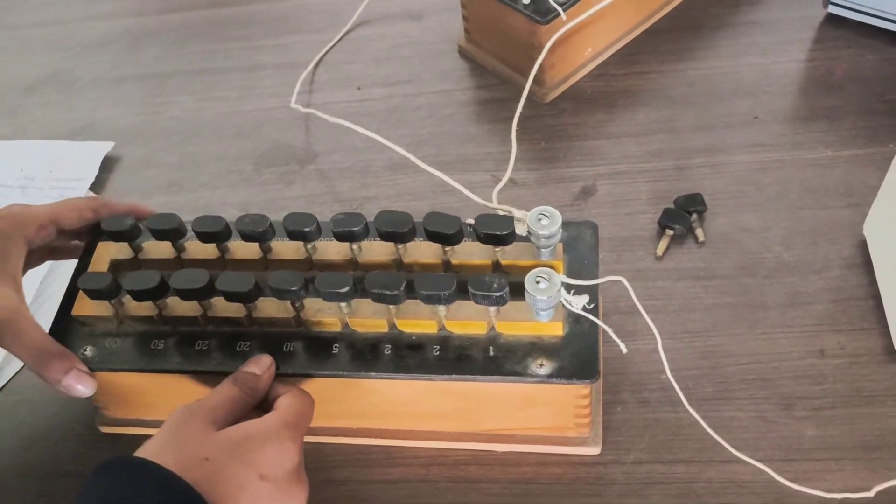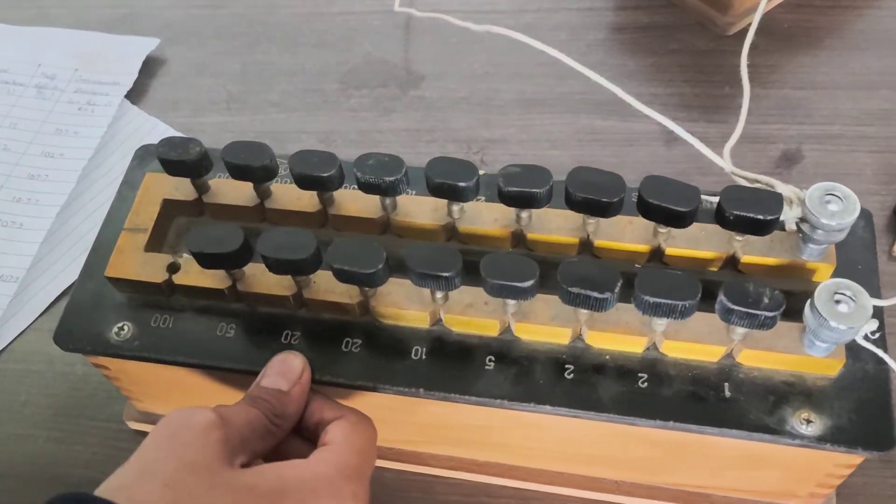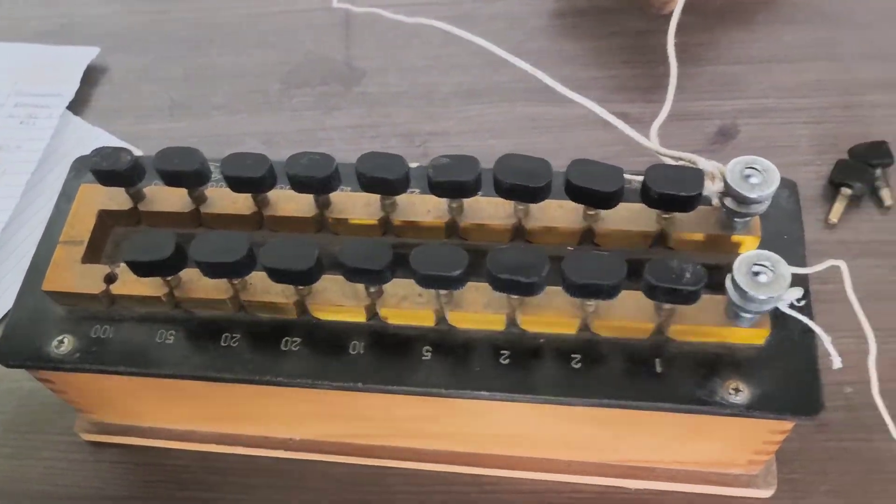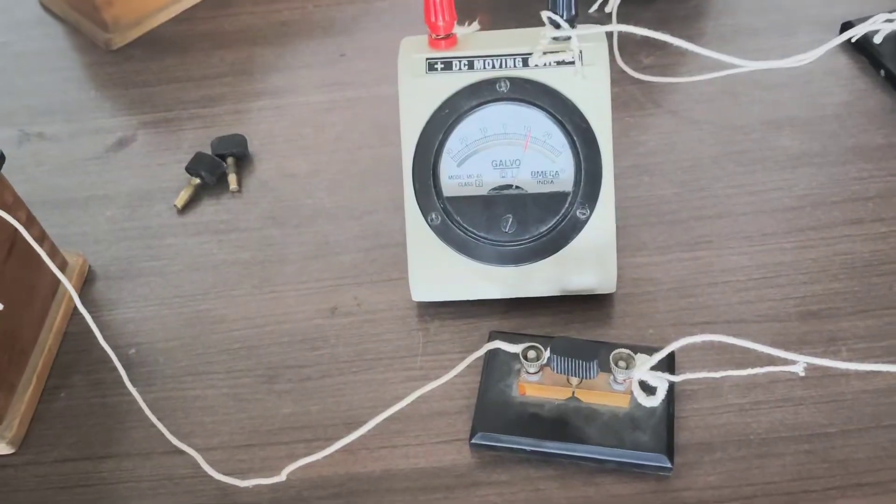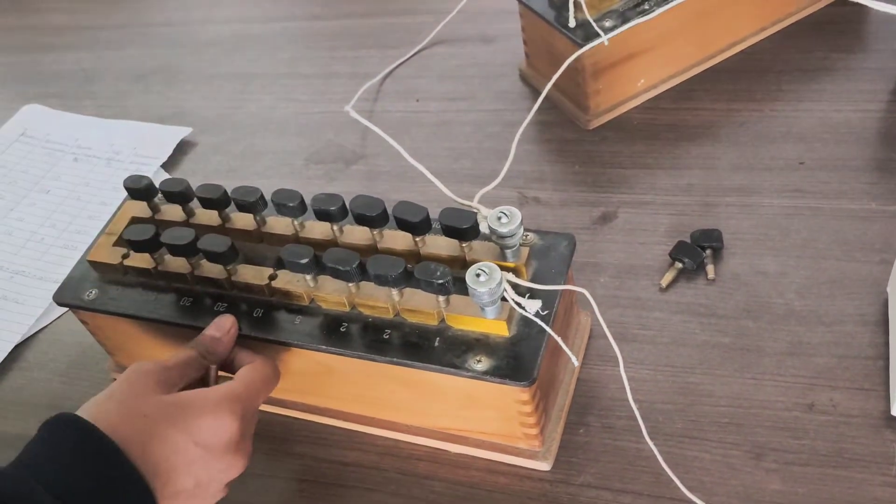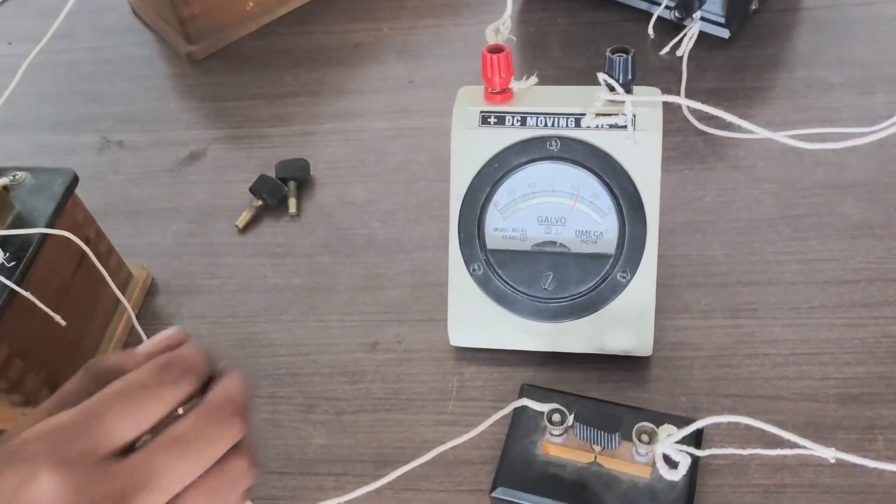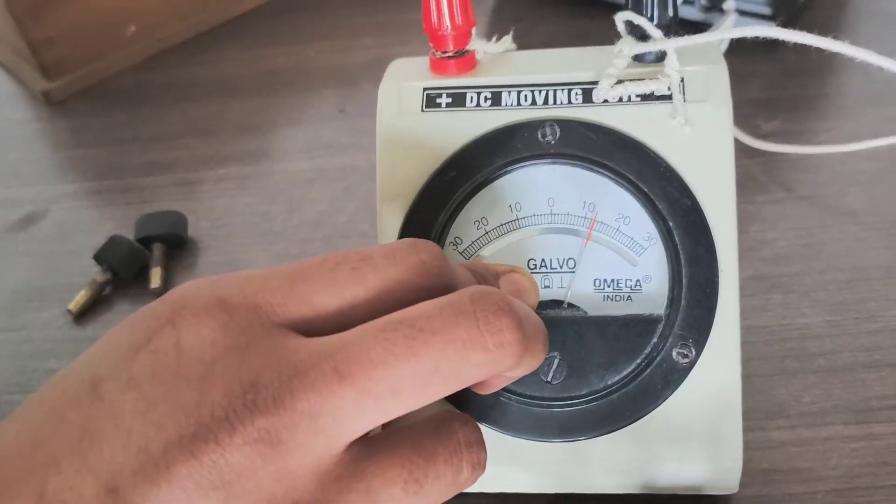So let's take out 100 ohms from the shunt resistance. Okay we have to take 10 ohms. Here you can see the reading is pointing towards 30.